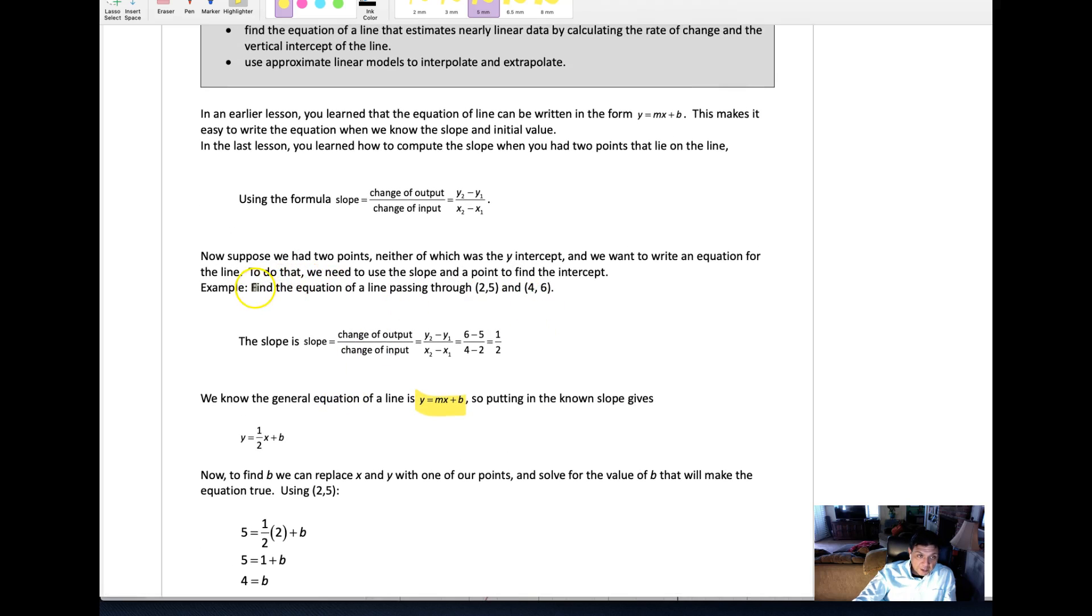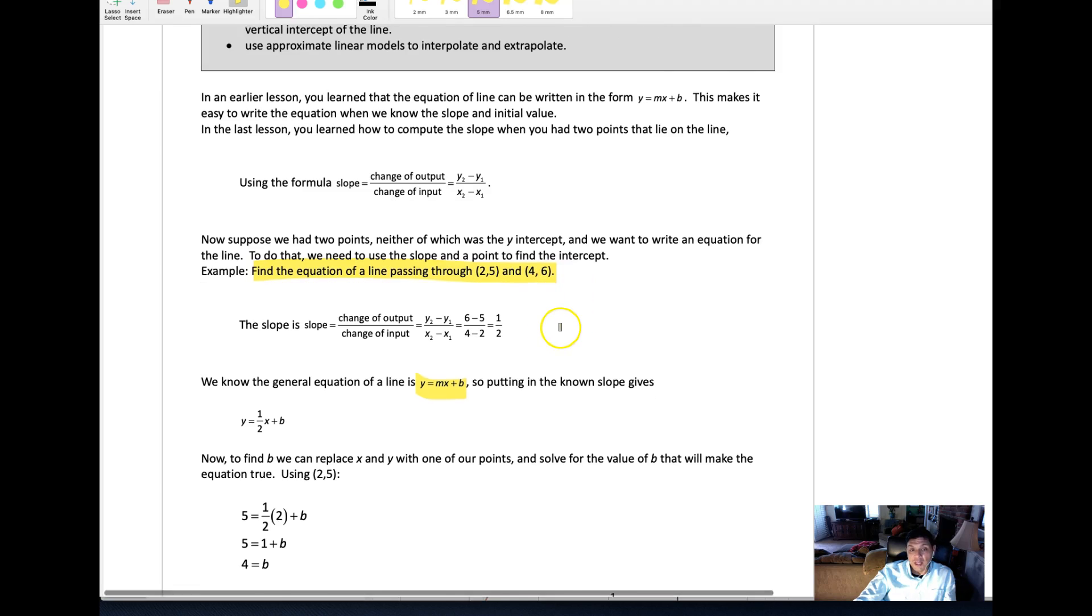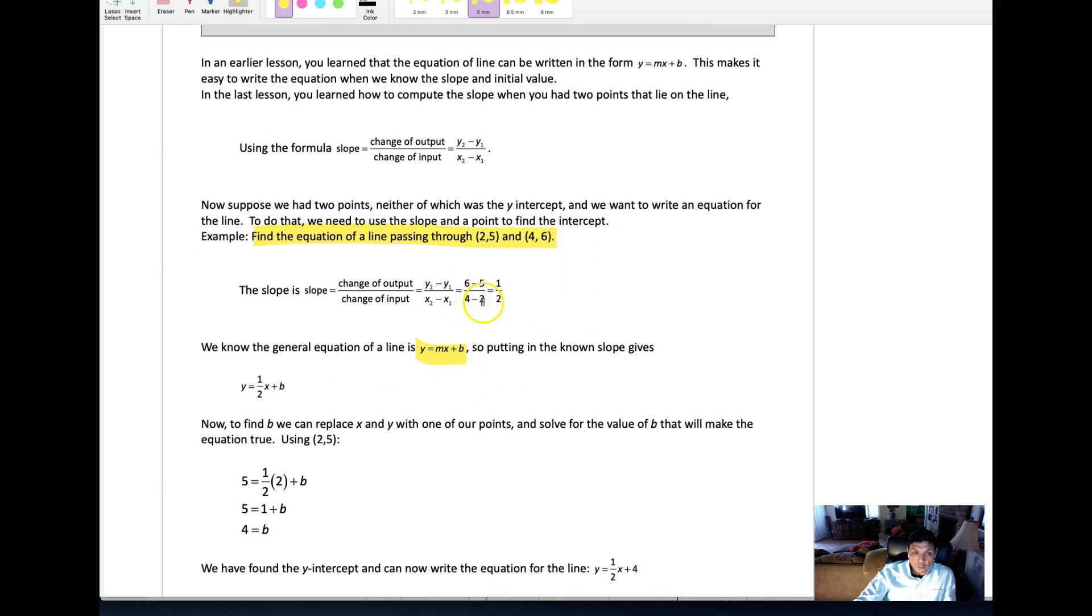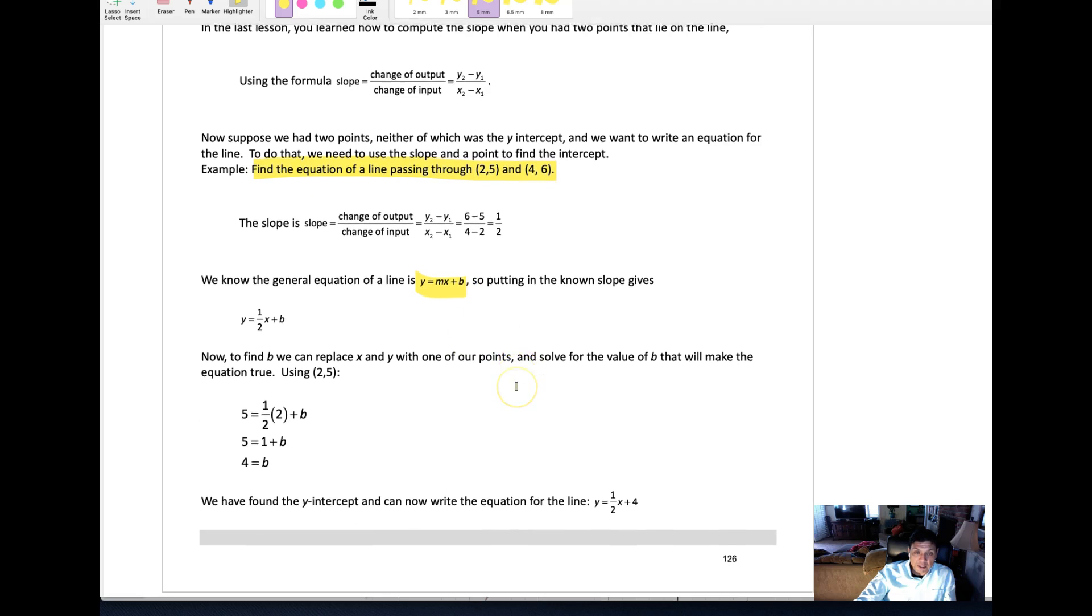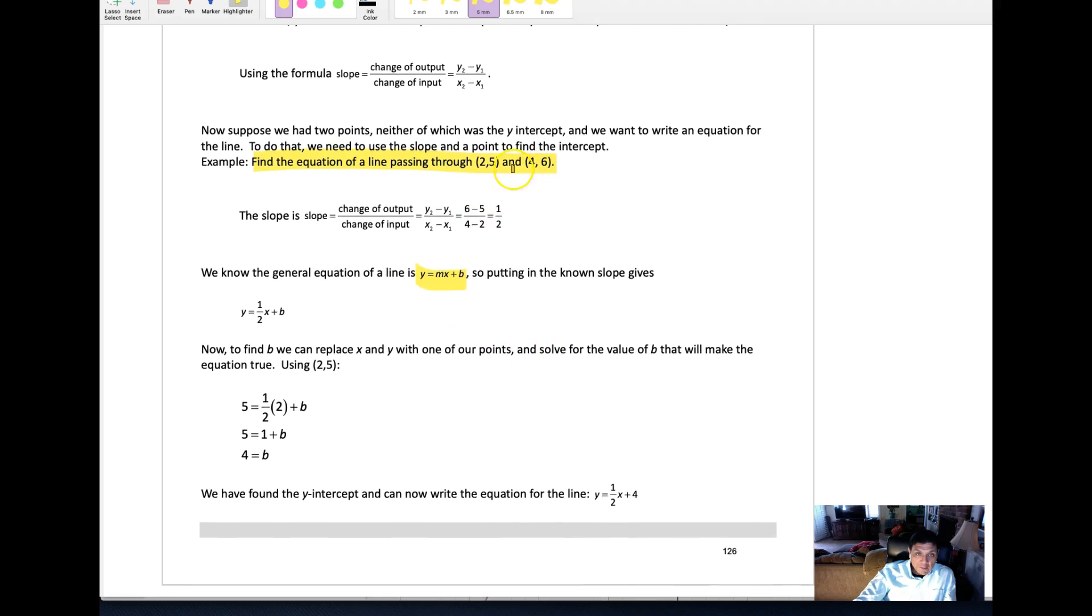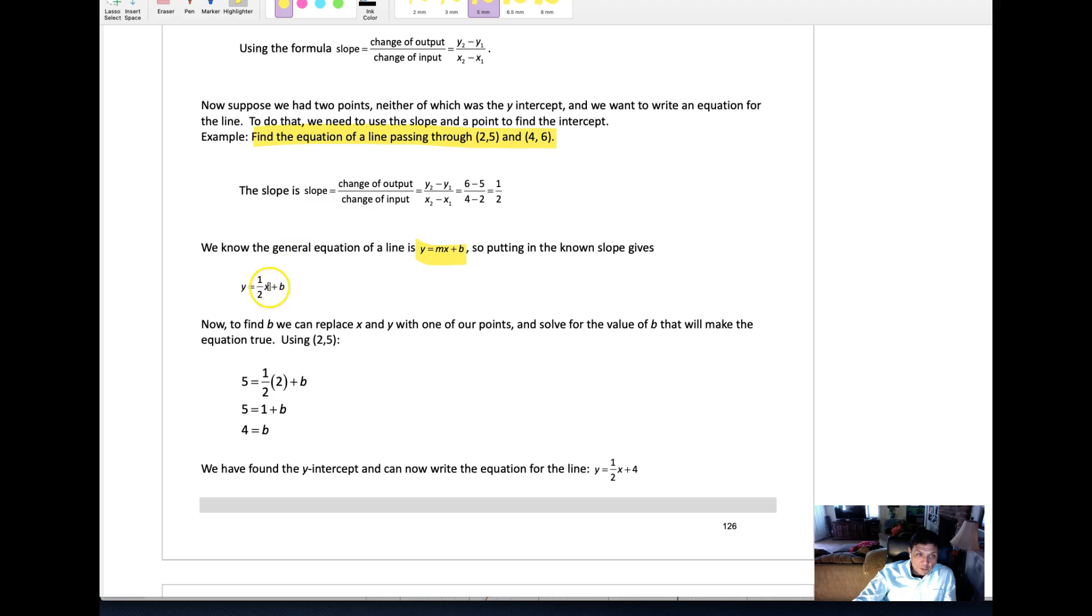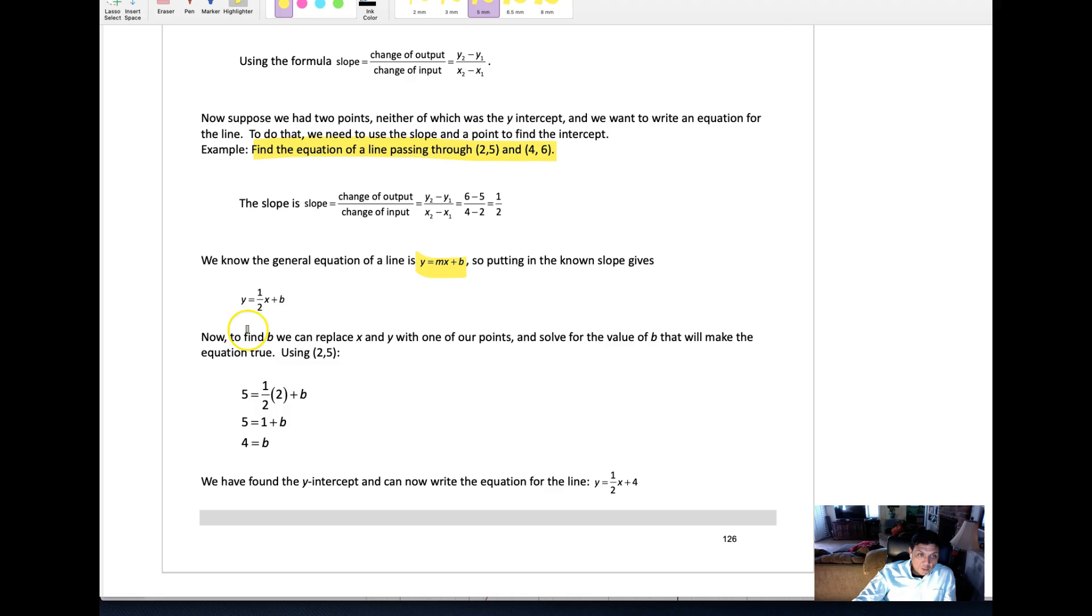For example, find the equation of a line passing through two points. In order to find the equation of a line, we need the slope and we need to know what the y-intercept is. We have an algebraic technique to do that. After you find the slope, you substitute your slope into the general equation. Notice there's still three variables, so we're going to substitute one of these points, could be either point, into this equation and solve for the y-intercept.